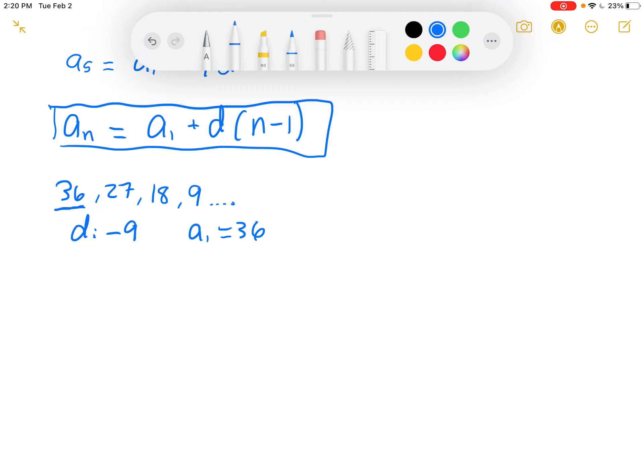So therefore, the explicit formula for the sequence would be A sub N is equal to 36 plus negative 9 times N minus 1. If we were to, say, find the 10th number of the sequence, that's what we were looking for, we can simply replace 10 with N.